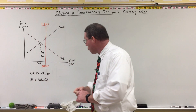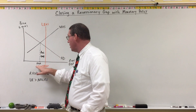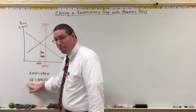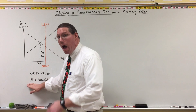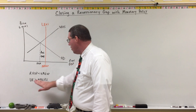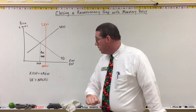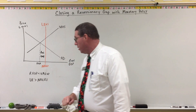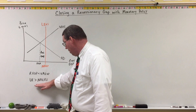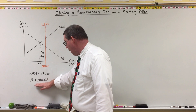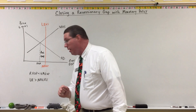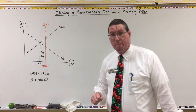Because real GDP is low, the unemployment rate is high — our unemployment rate is higher than the non-accelerating inflation rate of unemployment. Remember that NAIRU is associated with output at natural real GDP.